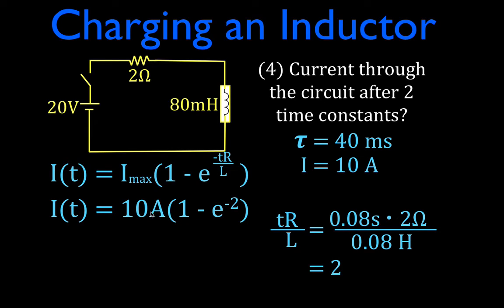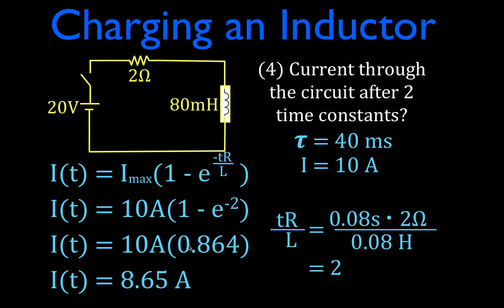So then this is 10, and then 1 minus E raised to minus 2 is 0.864, which is 86.4. If you remember in the previous video, which you can link to in the upper right, I went through how we get those values for 1, 2, 3, 4, 5 time constants for the current and the voltage. And you should remember that after one time constant, the current is 63.2%, and after two time constants, the current is always going to be 86.4% of the eventual maximum.